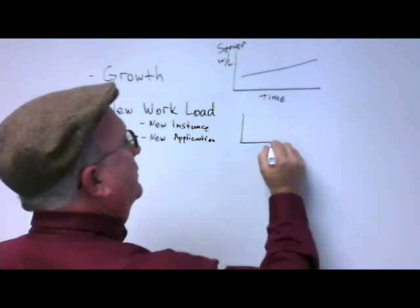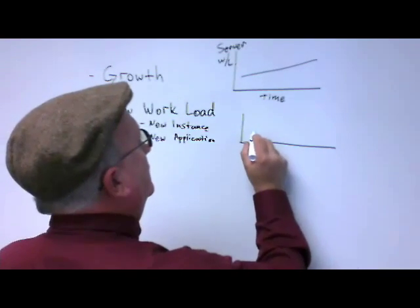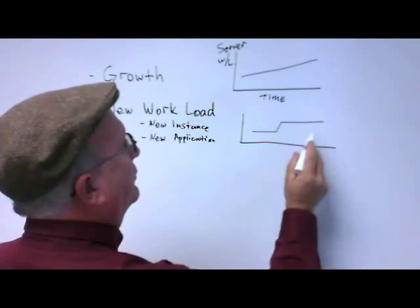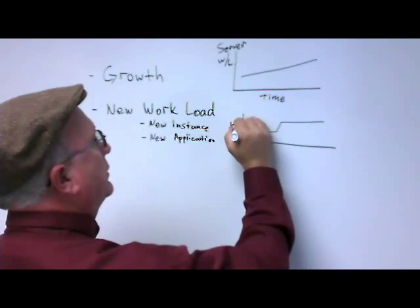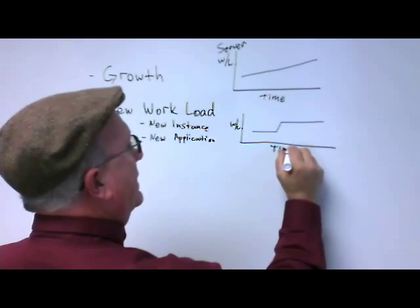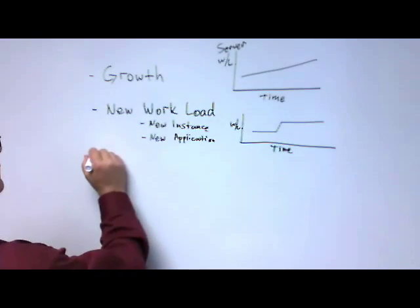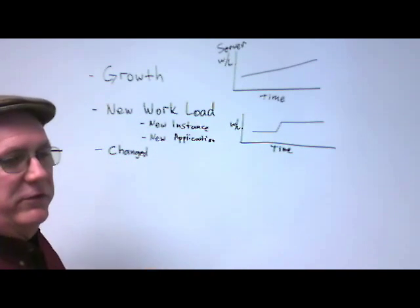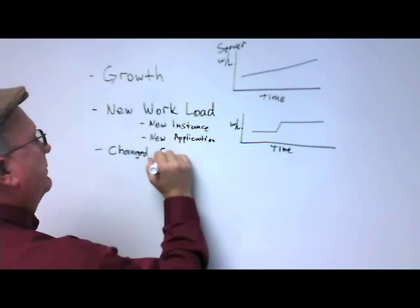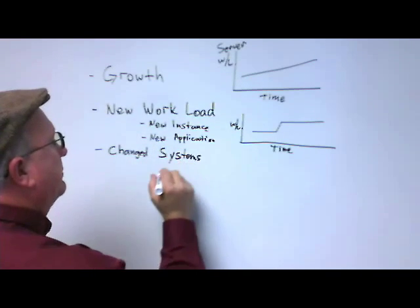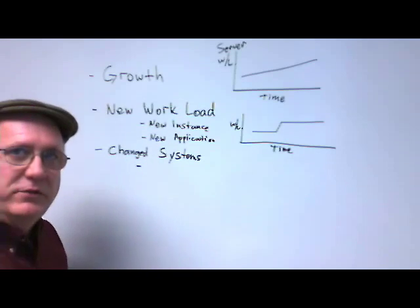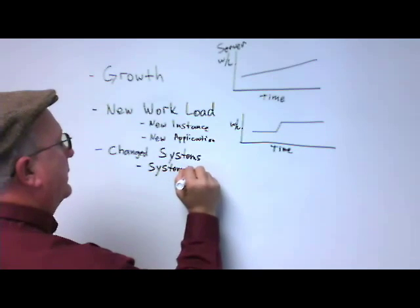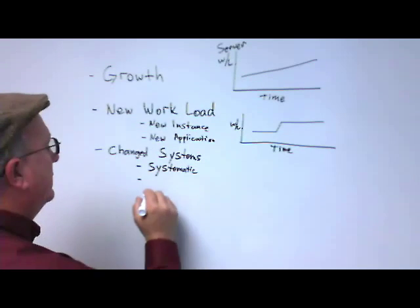If we were to graph new workload over time, there might be some organic growth, but the defining characteristic is workload over time. The next area would be a changed system. A changed system can be one of two things: either a systematic change, or an application change.